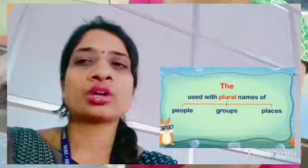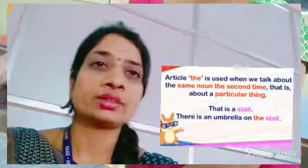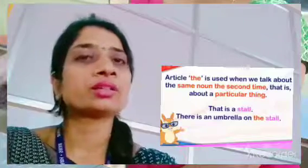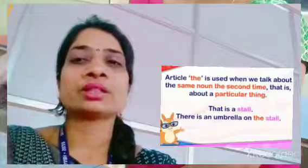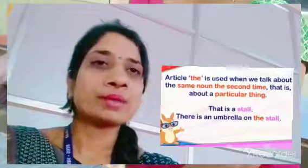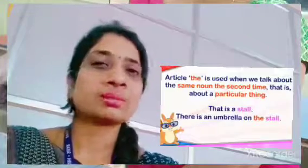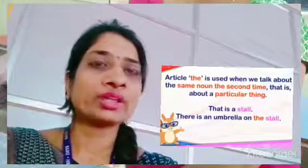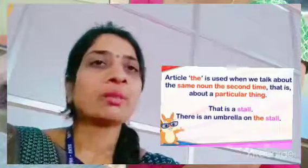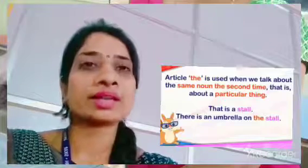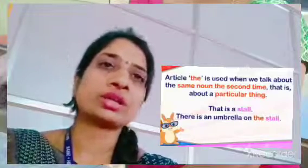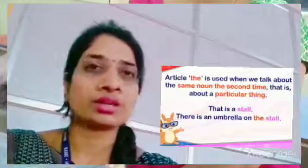'The' is used when we talk about the same noun for the second time. When we refer to a noun again that was already mentioned, we use 'the.' For example: 'That is a stall. There is an umbrella on the stall.' When we first mentioned the stall, we used 'a.' But the second time we mention stall, we use 'the stall.'